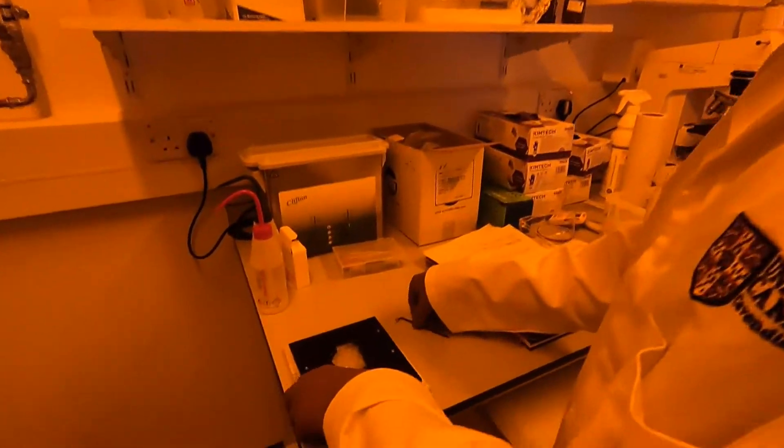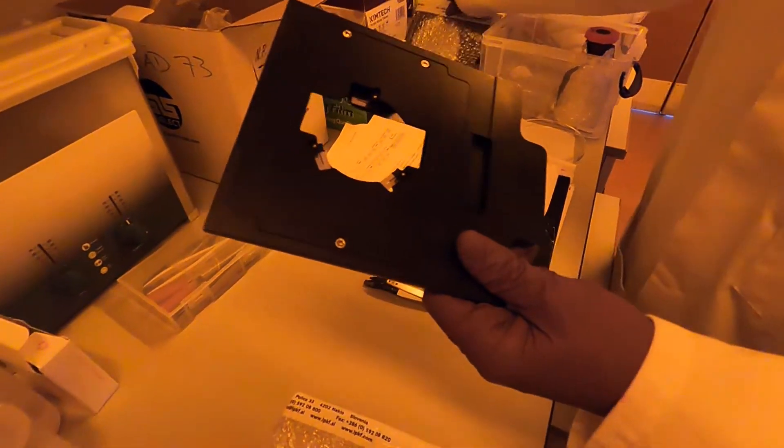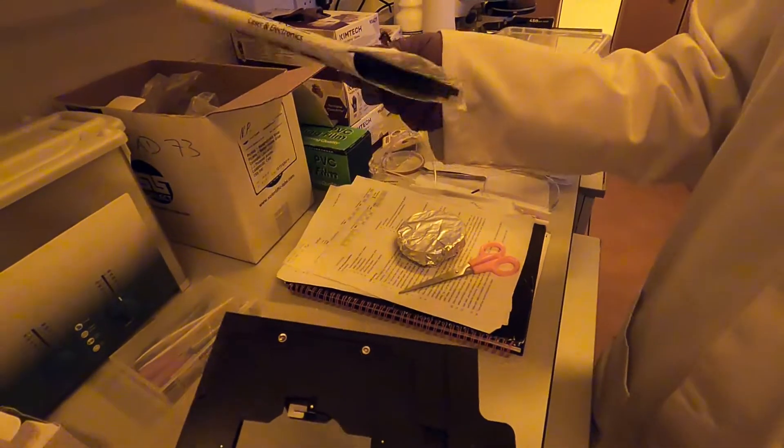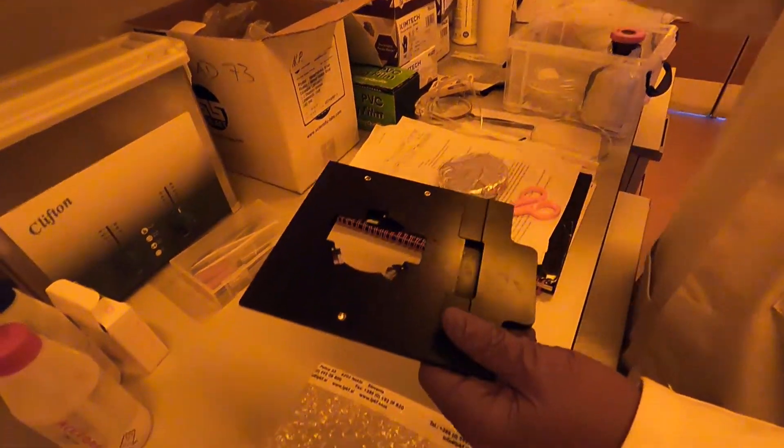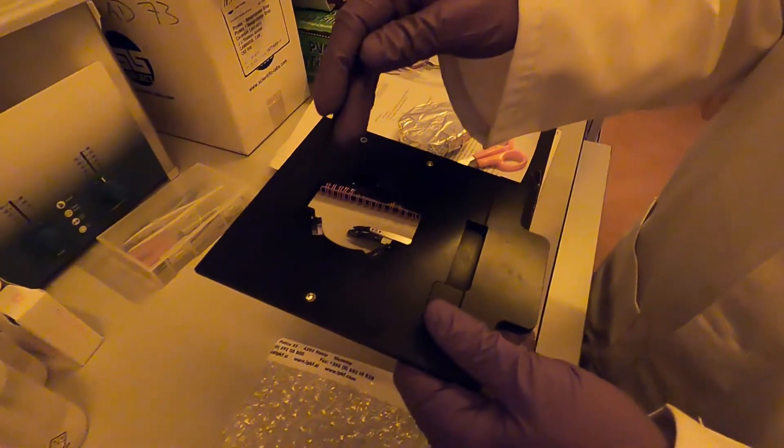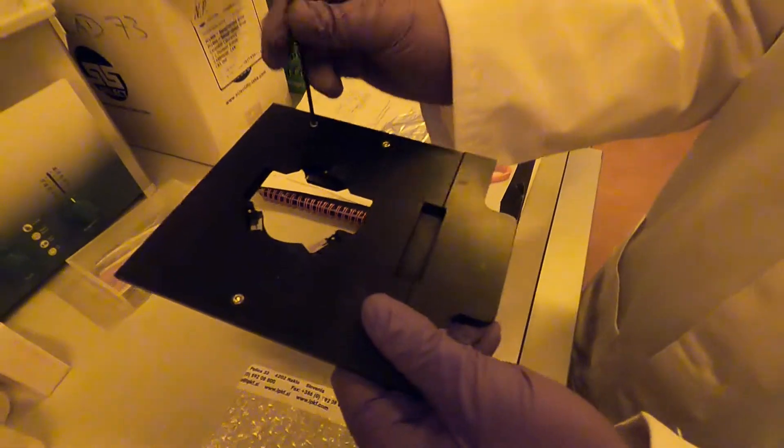While the sample is cooling down I can prepare the sample holder for the laser writer. This is one of the two sample holders that we've got. The 4-inch wafer would go in this one, and in this other one you can put the standard microscope glass slide in this rectangular aperture and in the circular one we can put the 2-inch wafer.